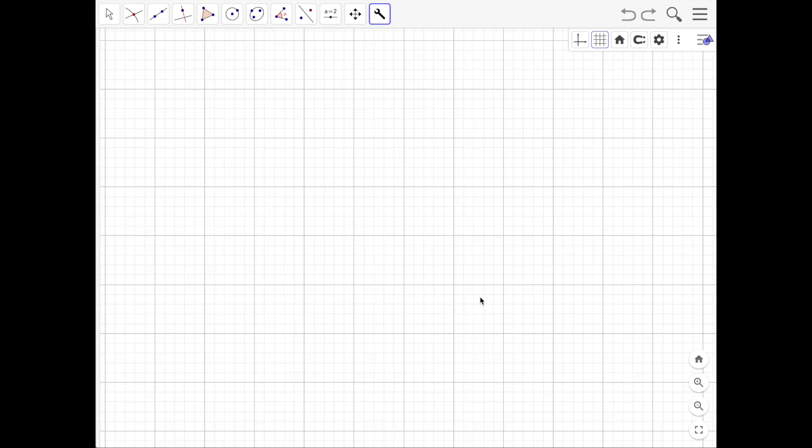So we've gone through the theory. Now it's time to see it in action. Let's see how we can use these conic sections to find tangent circles. So for this, I'm going to use GeoGebra, which is a free online graphing calculator tool. It's also what I've been using for the visualizations in this video.